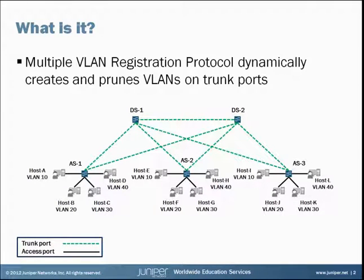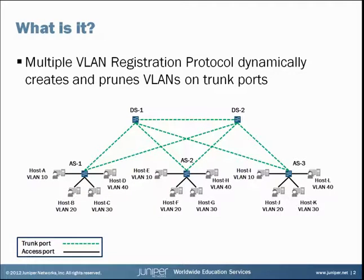Here on the slide we see a number of switches — access switches and distribution switches. At the bottom, access switches AS1, 2, and 3, and at the top, distribution switches 1 and 2. The connections highlighted with the green dotted lines that interconnect those various switches are trunk ports. MVRP is there to offset some of the administration tasks on provisioning those specific trunk ports.